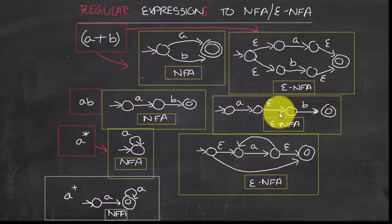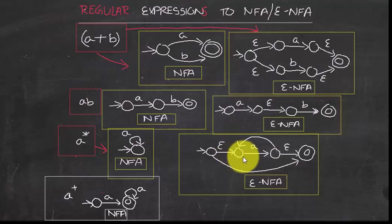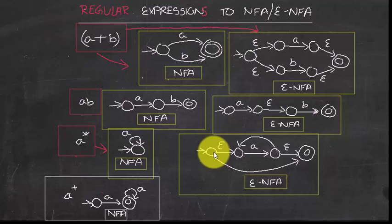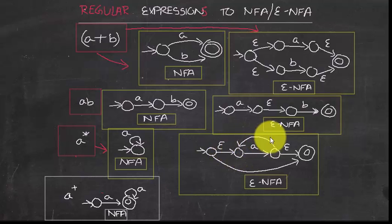For concatenation in an epsilon-NFA, you put an epsilon in the middle between symbols. So for ABC it would be: A, epsilon, B, epsilon, C, then the accepting state. For Kleene closure, you have an epsilon at the beginning, epsilon at the end, and you can go directly to the accepting state with epsilon.